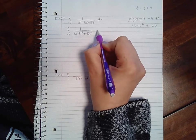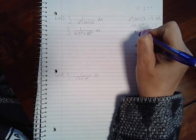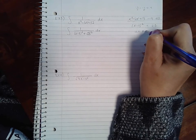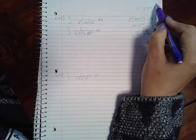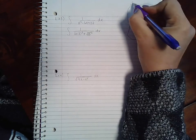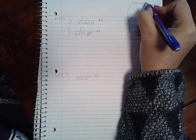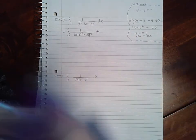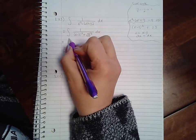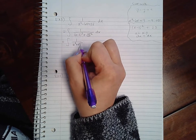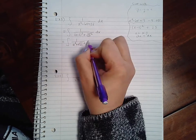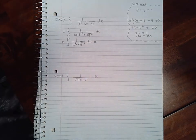If I use u as x minus three, du is just dx. So again, this is all just side work. Make sure you put your equal signs here. I'm going to use this as one over u squared plus the square root of 23 squared du.